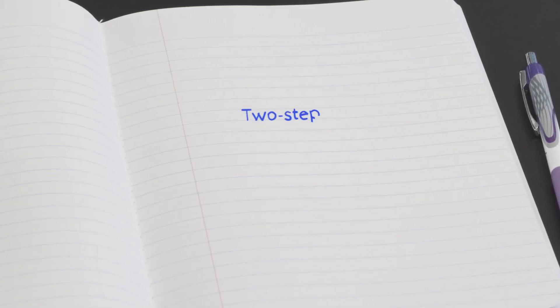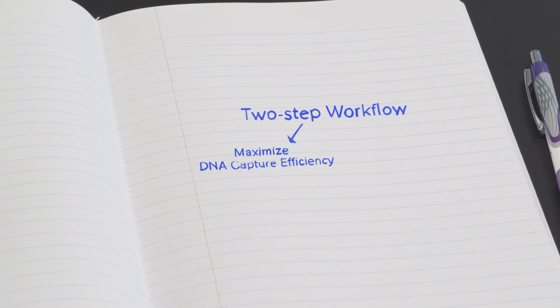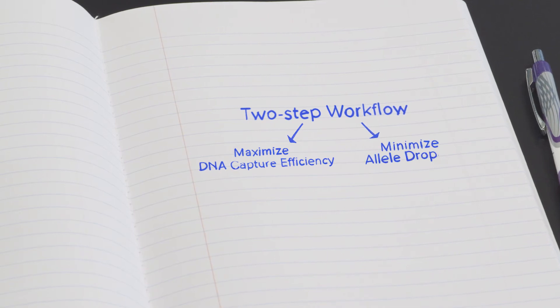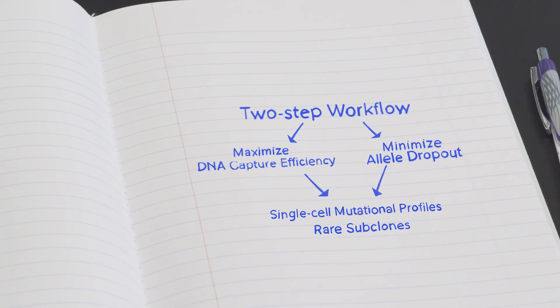By separating cell lysis from DNA amplification, this two-step approach maximizes DNA capture efficiency and minimizes allele dropout, ultimately improving the detection of single cell mutation patterns and rare subclones.